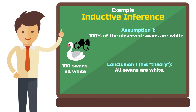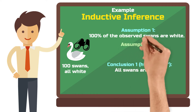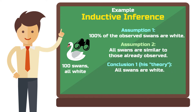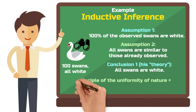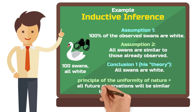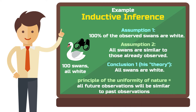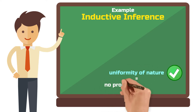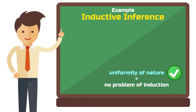For this conclusion to become logically rational, the ornithologist must add an additional condition. Assumption 1: 100% of the observed swans are white. Assumption 2: all swans are similar to those already observed. Conclusion 1: all swans are white. The second assumption is also known as the principle of the uniformity of nature — it means that all future observations will be similar to past observations, or put simply, in the future everything will always occur as it has in the past. If this principle is true, then there is no problem of induction and the inductive conclusion would be logically valid.